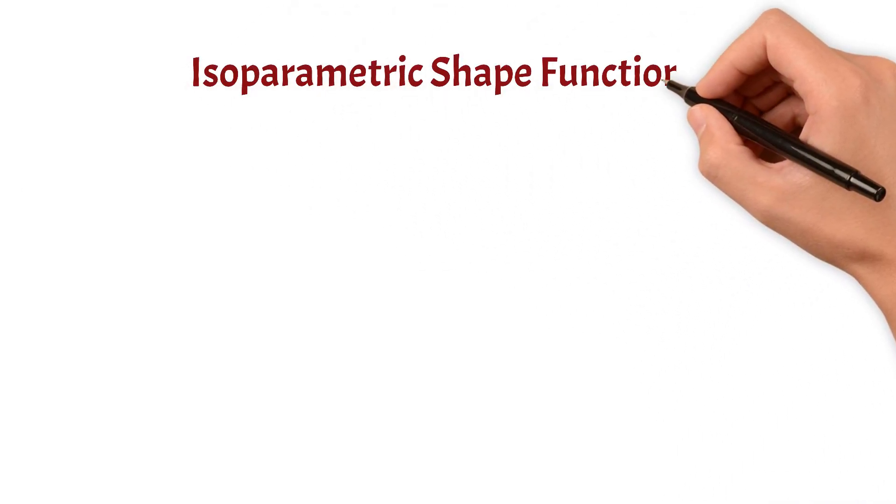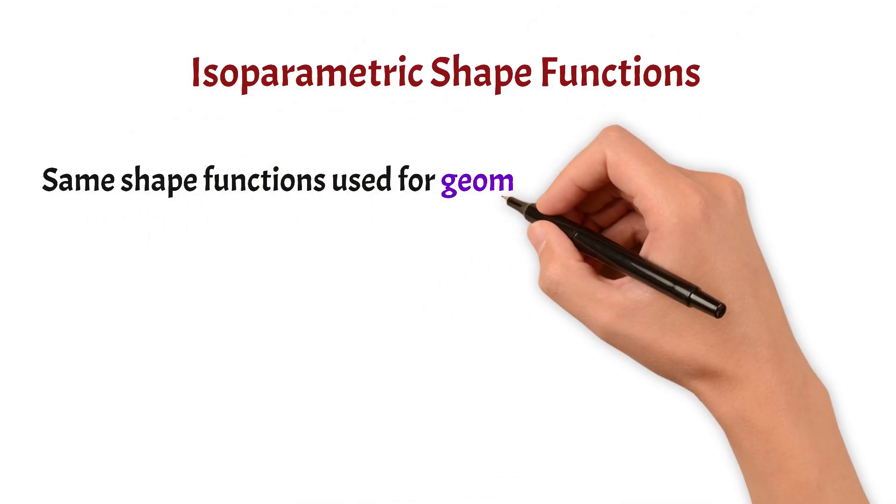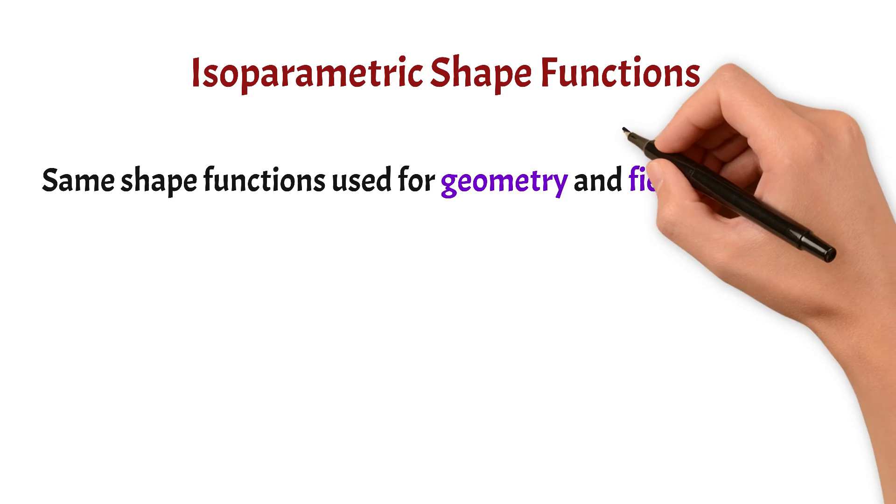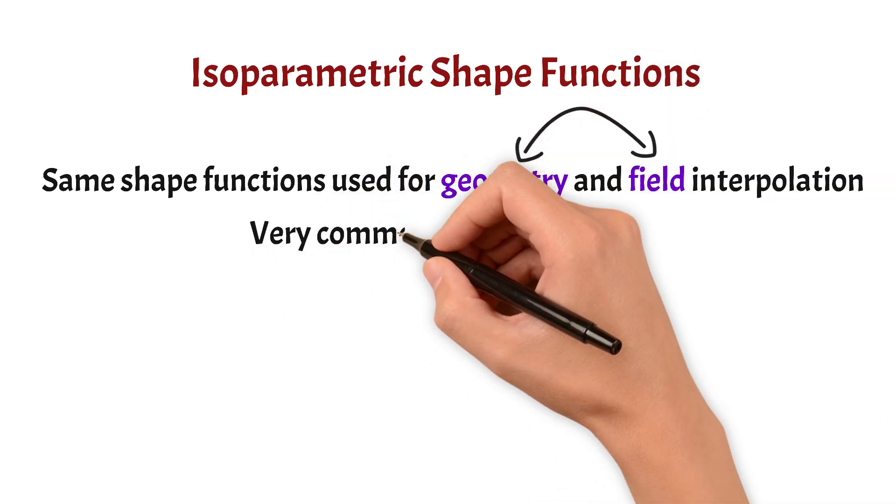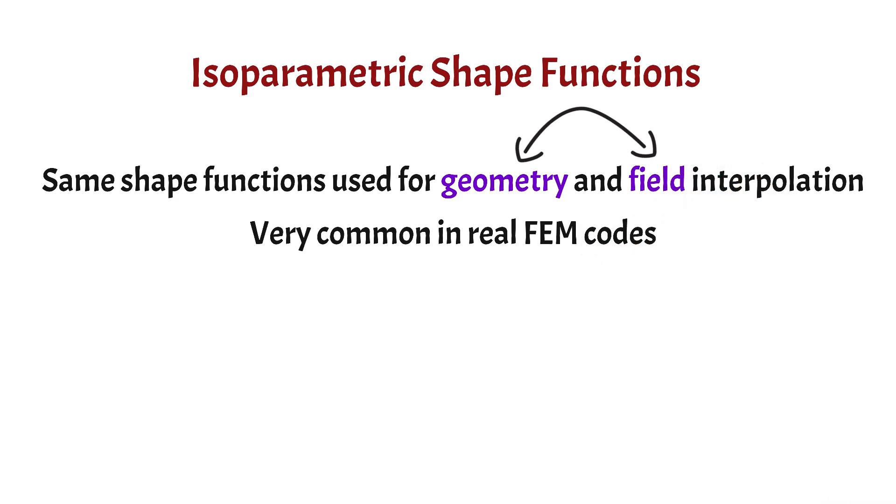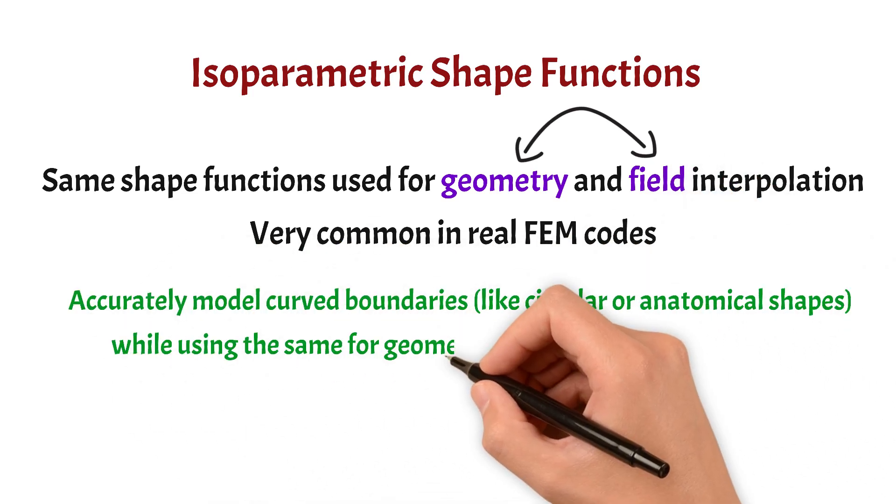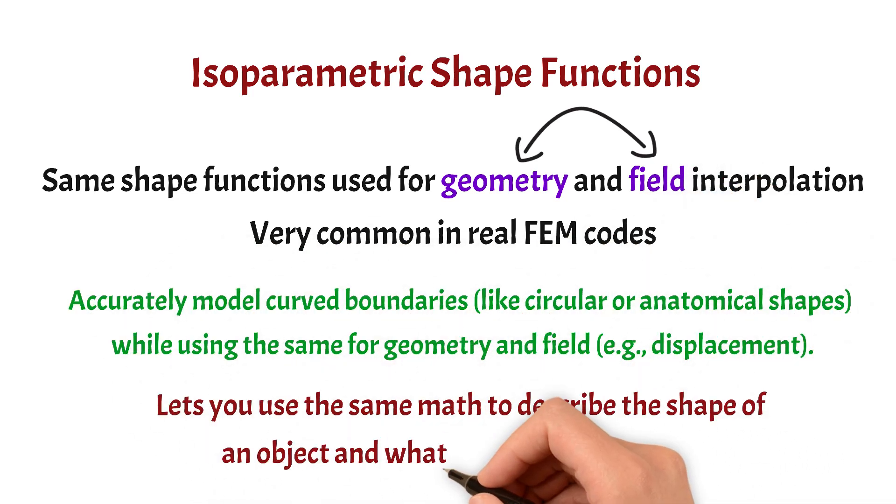Alright, now this is a really cool tool. Note the word tool that I used just now. So, isoparametric shape functions basically let you reuse the same shape functions for both the geometry of your element and the field you are solving, for example, if you are solving for a displacement, temperature or stress.